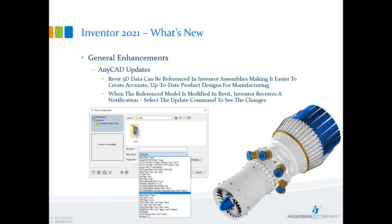AnyCAD updates for this release include support for Revit data. If you're receiving Revit project files (.RVT), you can place them directly into Inventor assemblies using AnyCAD. If you receive an updated version, save over it, or if files are saved to a Windows folder from Revit Structure, Architecture, or MEP, you can hit the update command inside Inventor and it automatically updates the models with live reference updates from the Revit side.